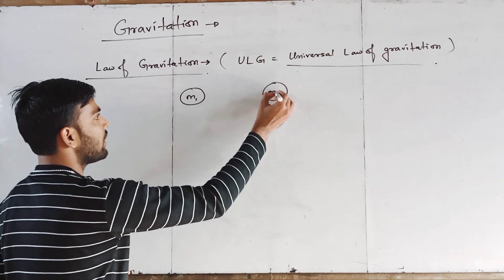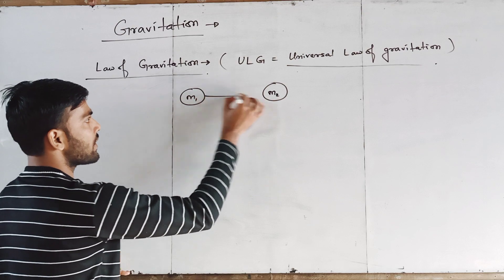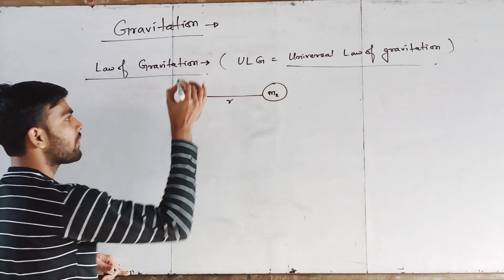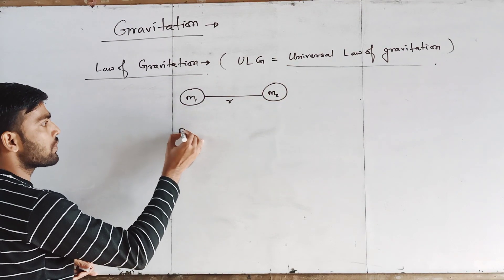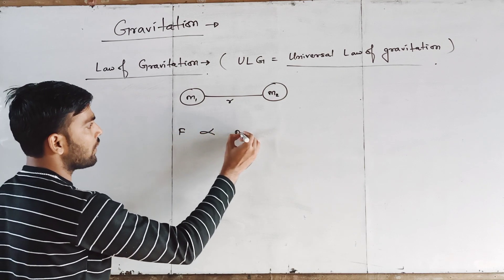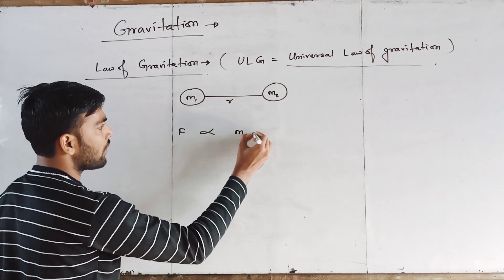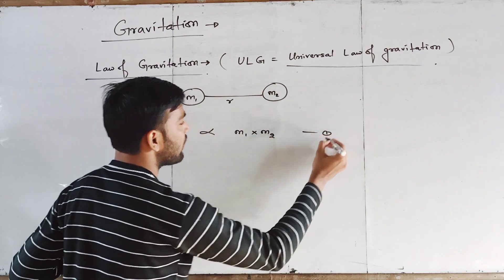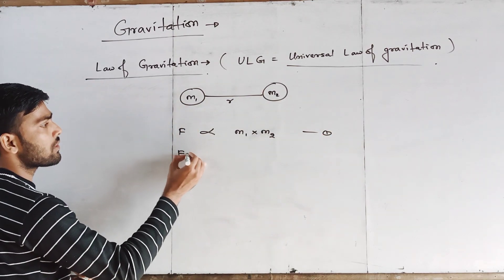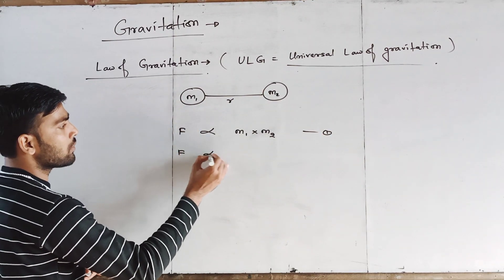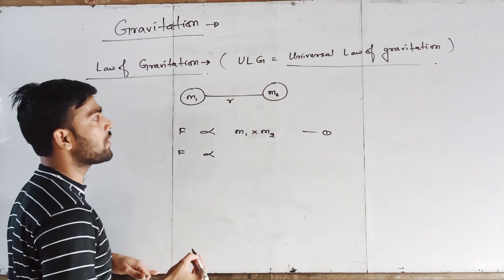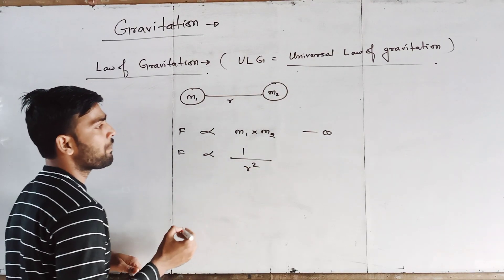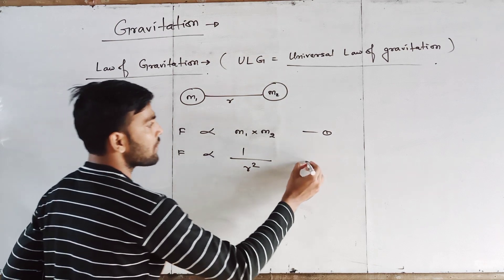The two masses are M1 and M2, and the distance between them is R. Then gravitational force F is directly proportional to the product of their masses — equation number one. And gravitational force is also inversely proportional to the square of the distance between them — equation number two.